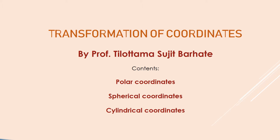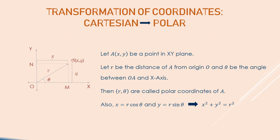Let us start with the polar coordinate system. In the Cartesian system, we represent any point A by (x, y). Consider any point A in the xy-plane. Here r is the distance of A from the origin, and theta is the angle between OA and the x-axis. These, r comma theta, are called the polar coordinates of A.